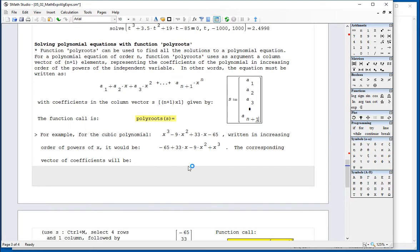For example, if you have this cubic equation, a cubic polynomial actually, and then you write it in increasing order of the powers of x, you will have minus 65 plus 33x minus 9x squared plus x cubed.